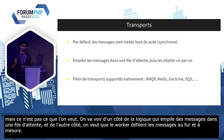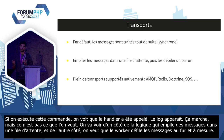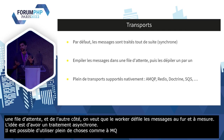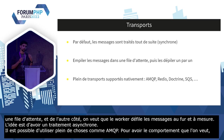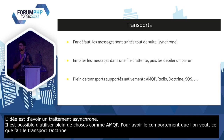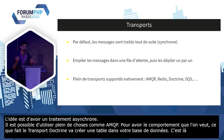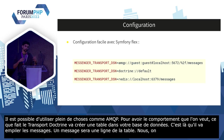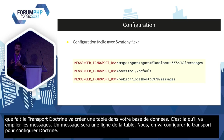Dans Symfony, il y a plein de transports supportés nativement : RabbitMQ avec AMQP, Redis, et d'autres. Nous, dans notre cas, on va utiliser Doctrine. Doctrine n'est pas un système de file d'attente en tant que tel, mais le transport Doctrine va créer une table dans votre base de données, et c'est dans cette table qu'il va empiler les messages, un message par ligne. On configure la variable d'environnement MESSAGE_TRANSPORT_DSN avec doctrine://default, où default correspond à la connexion Doctrine par défaut de votre application.